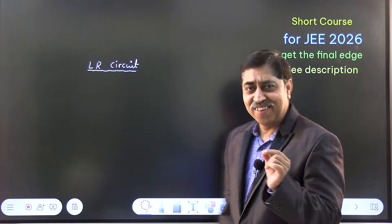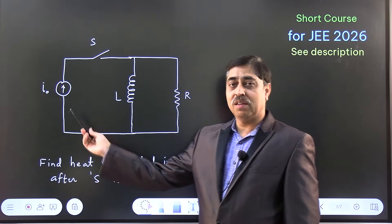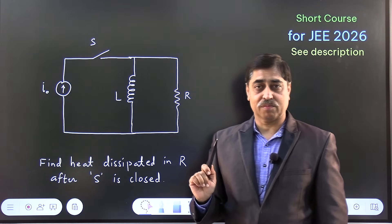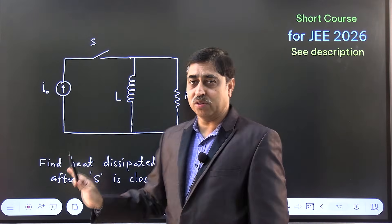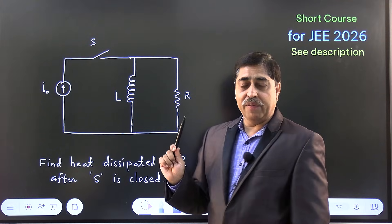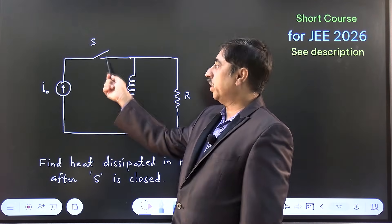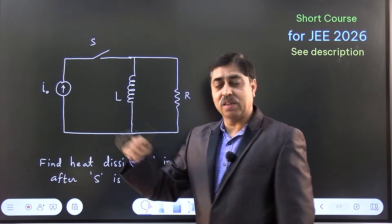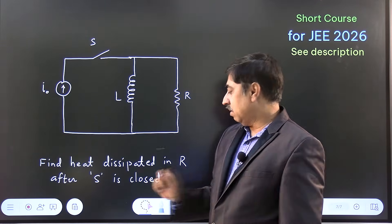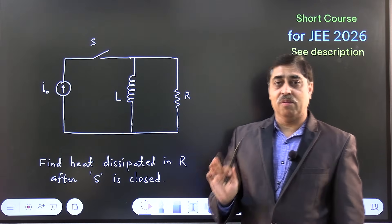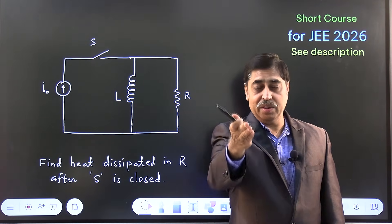Let us have a look at today's question. This is a constant current source which supplies a fixed constant current I₀. There is a pure inductor having inductance L, a pure resistor having resistance R, and a switch that is closed at time t = 0. The question says: find the total heat dissipated in this resistance after the switch has been closed.